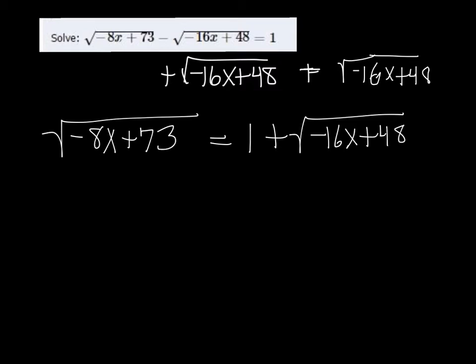To get rid of square roots, we square both sides. Now on the left side, it's no problem. The square of a square root is just whatever is inside of it. So this is just going to be minus 8x plus 73.